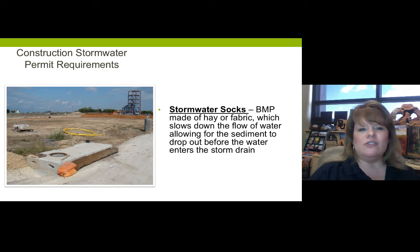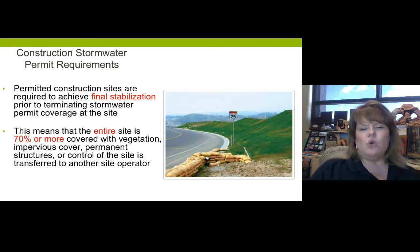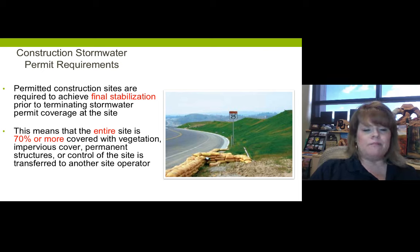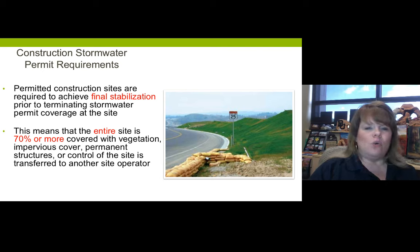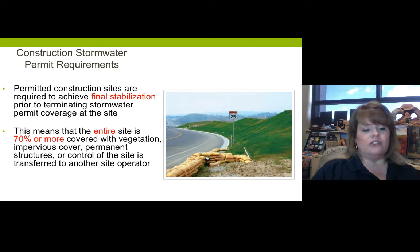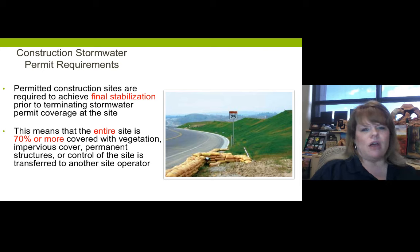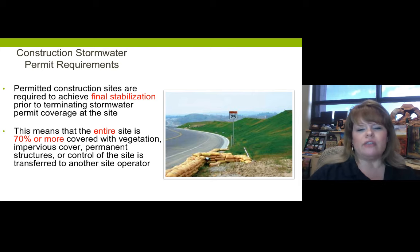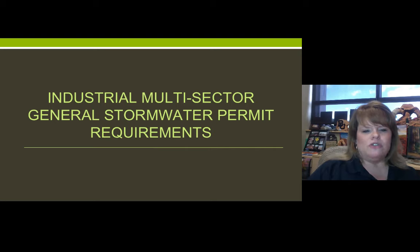Permitted construction sites are required to achieve final stabilization prior to terminating their stormwater coverage. We learned about terminating a construction site using a notice of termination. To achieve final stabilization, the entire permitted construction site must be 70% or more covered with vegetation, impervious cover — such as pavement, asphalt, or concrete — permanent structures, or control of the site must be transferred to another operator. It could go through a series of phases, from groundwork to foundation to electrical to exterior.